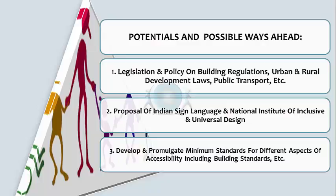There are many potentials and possible ways by which PWDs can be benefited and be part of inclusive development in all respects — that is, legislation and policy, building regulations, urban and rural development laws, and public transport. These are areas where improvements can be made. There is also a proposal for an Indian Sign Language institute and a National Institute of Inclusive and Universal Design, which will greatly help PWDs in India.